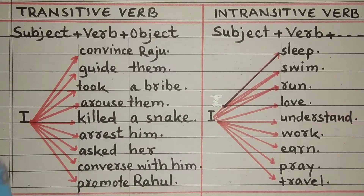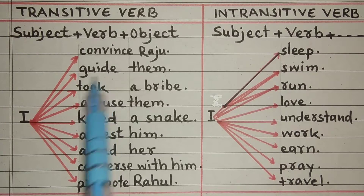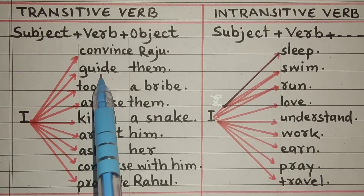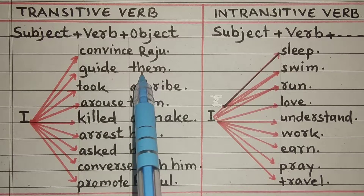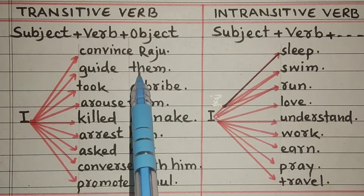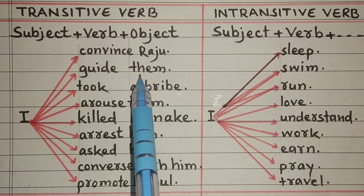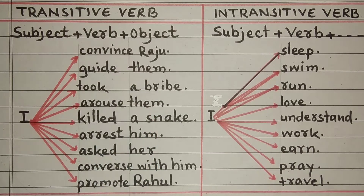First example: I convince — mein samjhata hoon, mein manata hoon. Samjhata hoon toh kisko samjhata hai? I convince Raju — mein Raju ko samjhata hoon. Aur bahut saare sentences bana sakte hain is tarah: I convince the students — mein bachon ko samjhata hoon. I convince the people — mein logon ko samjhata hoon. Second example: I guide — mein rahnumai karta hoon. I guide them — mein unki rahnumai karta hoon. I guide the students — mein talba ki rahnumai karta hoon.